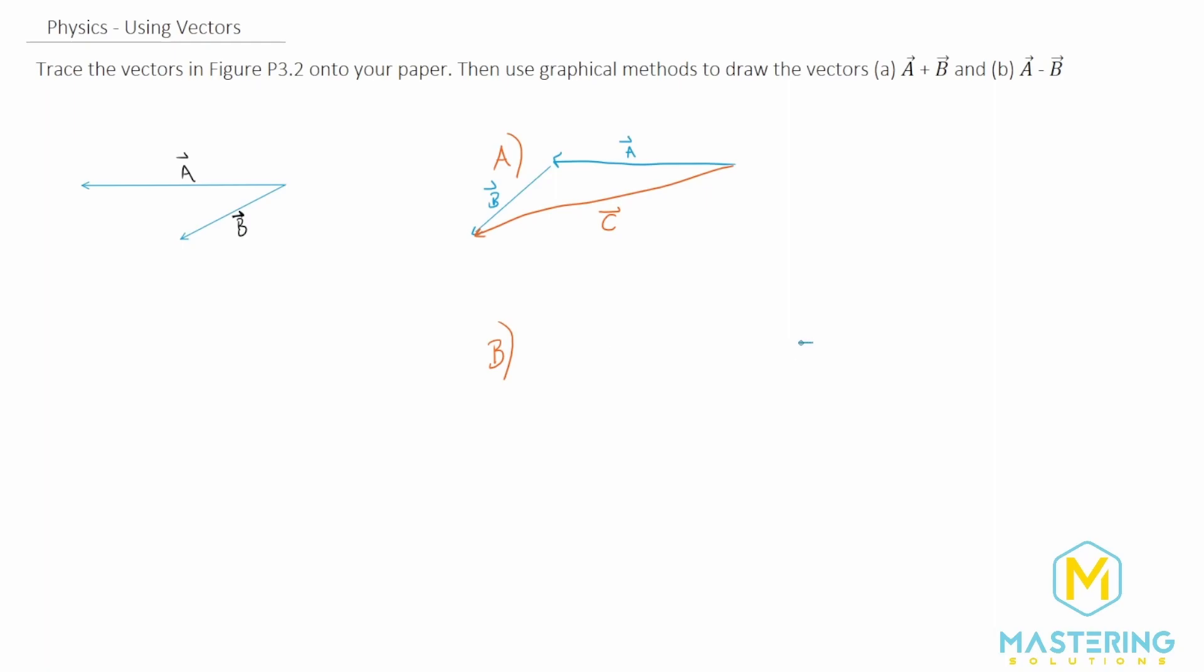So again, just draw the first one, just draw A. So there's A. And now when we draw B, we're going to flip it backwards. So they'll be tip to tip essentially.